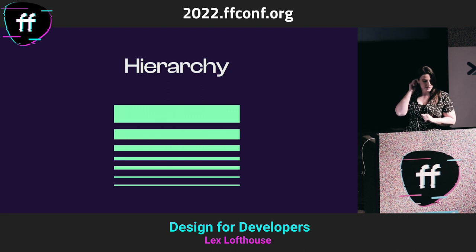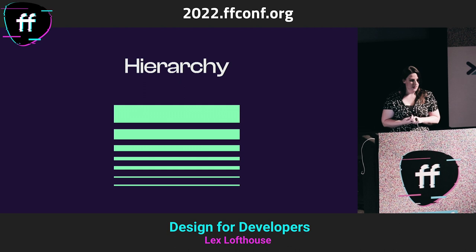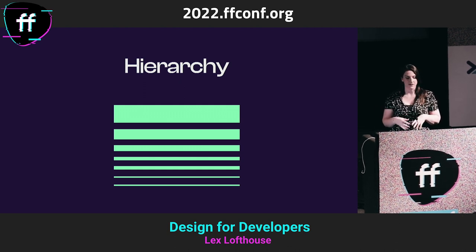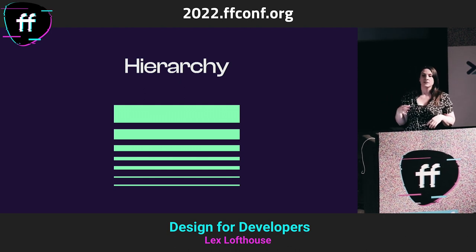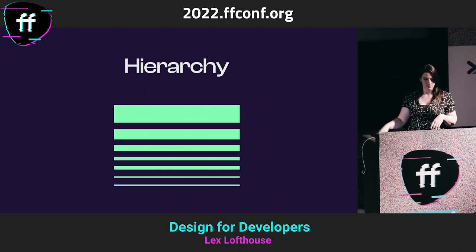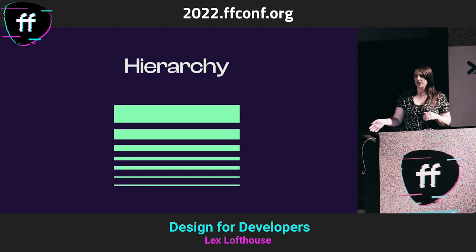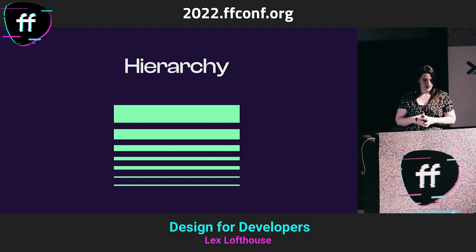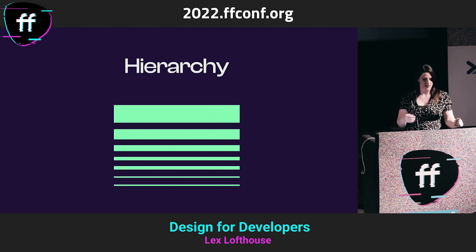Let's start with hierarchy. Similar to how we think of hierarchy in other aspects of the world, it's a system in which things are arranged according to their importance. Good design will visually indicate a clear hierarchy of content. One of the easiest methods is scale — the biggest thing on the page is the most prominent. Think about how we set up heading styles: in development we give them h1, h2, h3, and visually in design, h1 is the largest, h2 next, and so on.